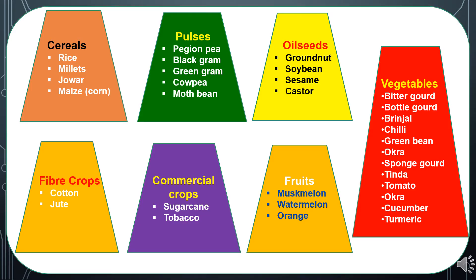Kharif crops are categorized as cereals, pulses, oilseeds, fiber crops, commercial crops, fruits and vegetables. Under cereals, the major crops are rice, millet, jowar and maize or corn. Under pulses: pigeon pea, black gram, green gram, cowpea and moth bean. Under oilseeds: groundnut, soybean, sesame and castor. Fiber crops include cotton and jute. Commercial crops include sugarcane and tobacco. Fruits include muskmelon, watermelon and orange. Vegetables include a wide range: pumpkin, bottle gourd, brinjal, chili, green bean, okra, sponge gourd, tinda, tomato, cucumber and turmeric.